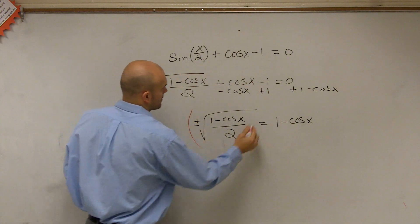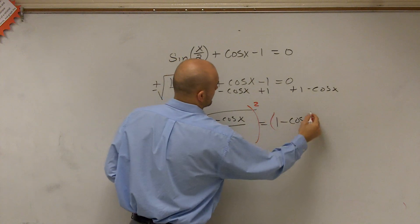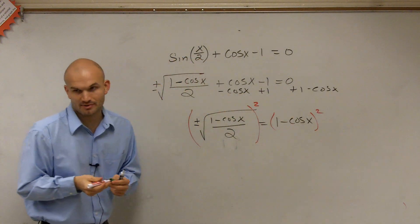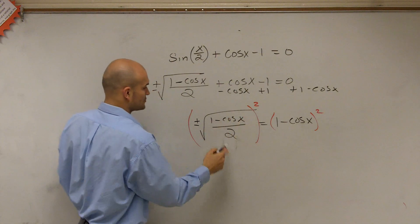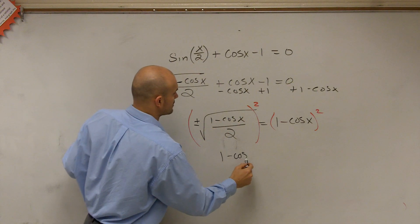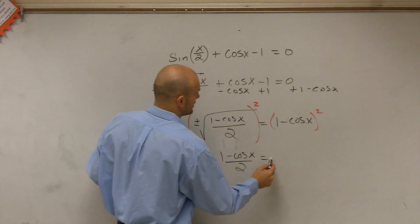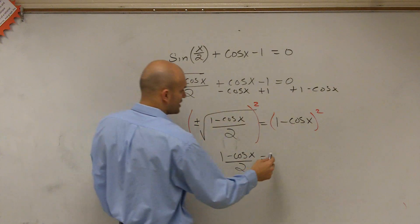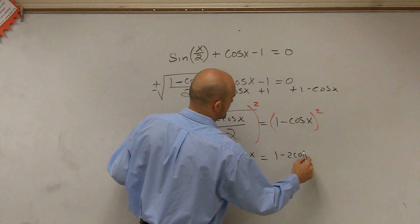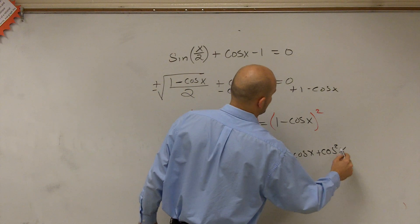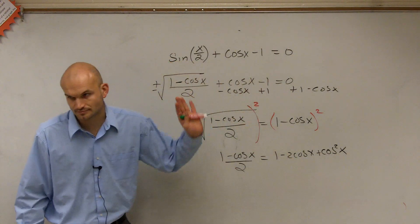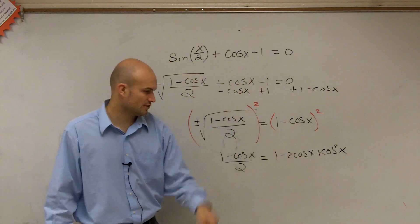Now I square. Now I still have a binomial squared, but you're just not going to be able to get rid of it. But the cool thing is I get rid of now my square root, which is 1 minus cosine of x divided by 2 equals, this is a binomial squared, so you should have 1 minus 2 cosine of x plus cosine squared of x. All right. That's just a lot of practice of foiling and getting that through.